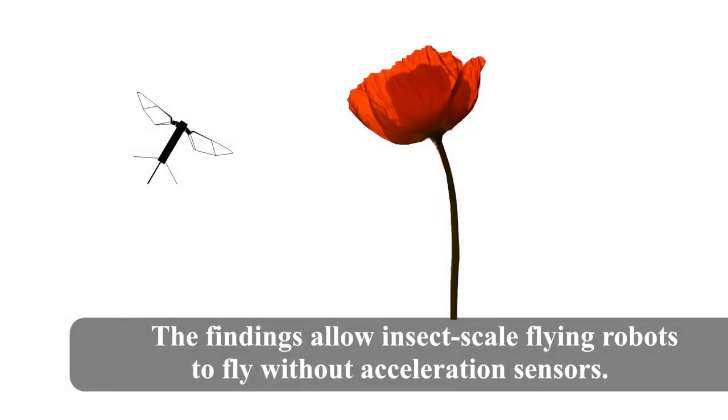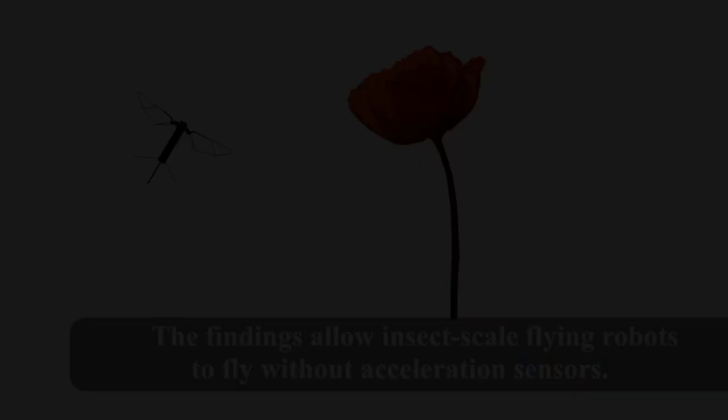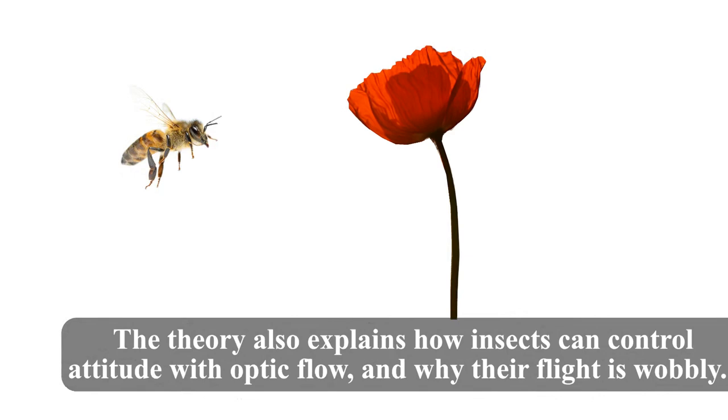The findings allow insect-scale flying robots to fly without acceleration sensors. The theory also explains how insects can control attitude with optic flow, and why their flight is often wobbly.